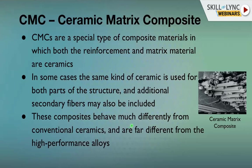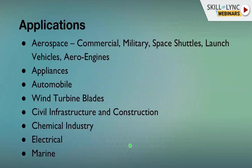CMCs behave very differently from conventional ceramics and from high-performance alloys. Superalloys today have good temperature capability up to 1200–1300°C, but ceramic matrix composites can be used even at 2000°C. That is the key highlight — CMCs are entirely different from any high-temperature alloy.